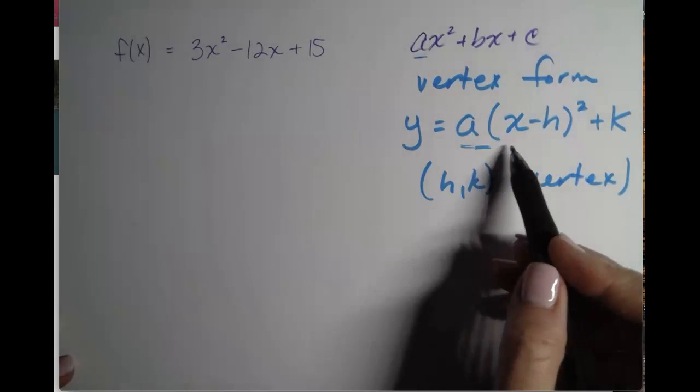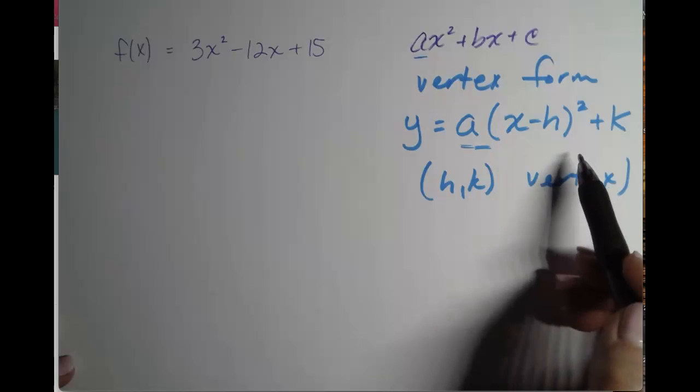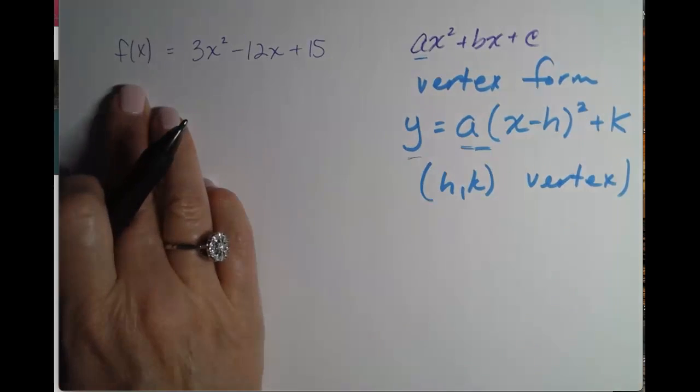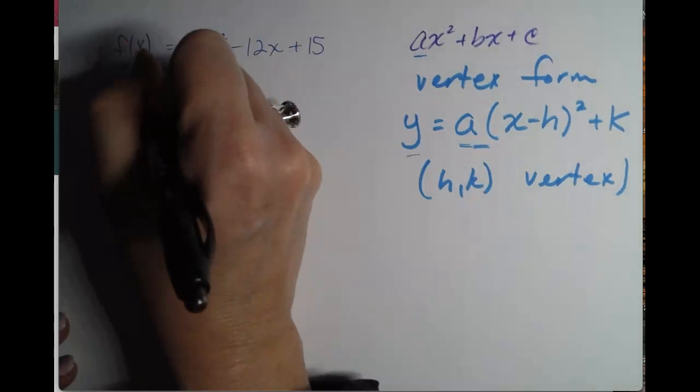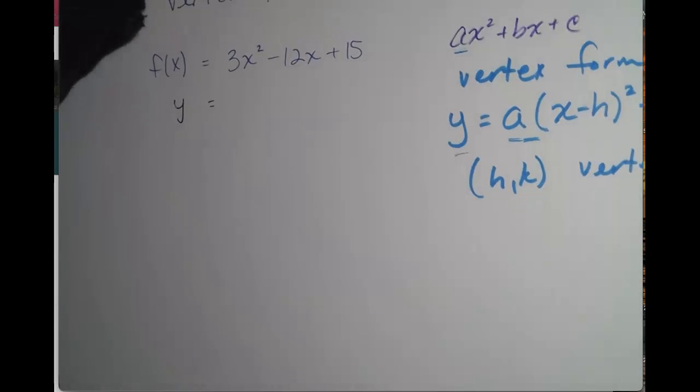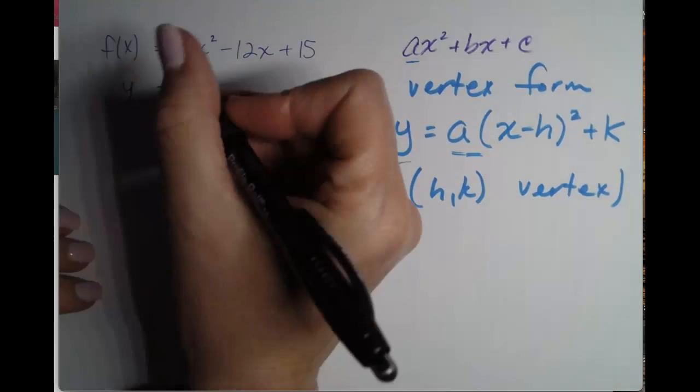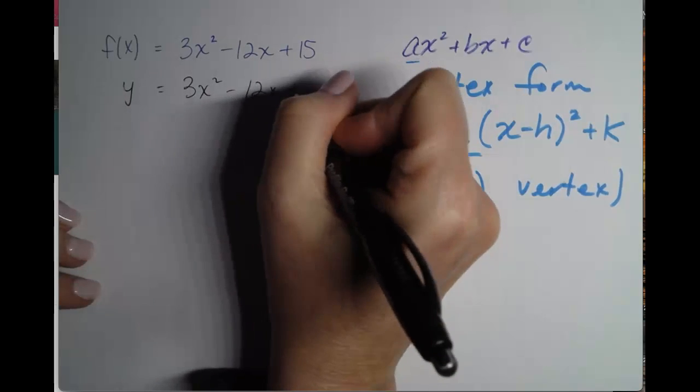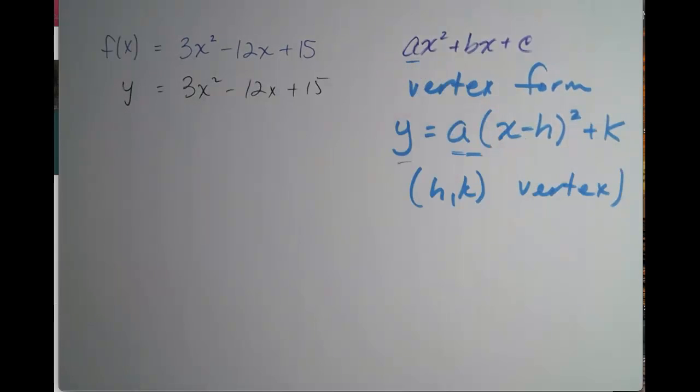So if we are now going to go from quadratic form to vertex form, think about where we are and what we need to do. So the first thing we're going to do is we're going to get rid of that f of x, and we're just going to let it be y. So y equals 3x squared minus 12x plus 15. So that's the first step.